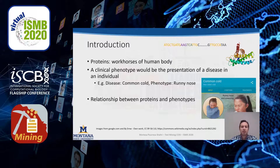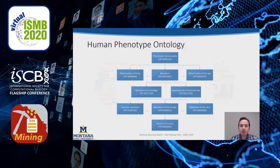Human Phenotype Ontology, or HPO, is a recently introduced ontology that describes phenotypic abnormalities observed in human diseases. It has a directed acyclic graph structure where more general terms appear at the top and more specific terms appear at the leaves. For each phenotype, we have an HPO term, an HPO ID, and the relations between HPO terms.